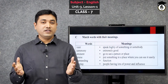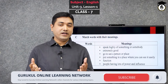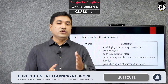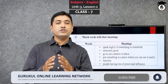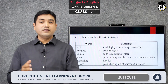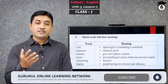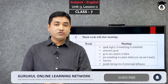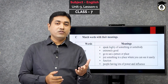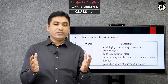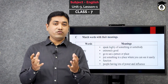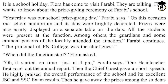In this passage, we can see that Flora and Farabi are best friends. They live in the same area. They also read in class 7, but they go to different schools. On a school holiday, Flora came to Farabi's house. She asked him some questions — she wanted to know about the prize-giving ceremony of his school. In reply, Farabi described in short the prize-giving ceremony of his school. He also mentioned that he got two prizes: one for regular attendance and one for good results in the last annual exam.